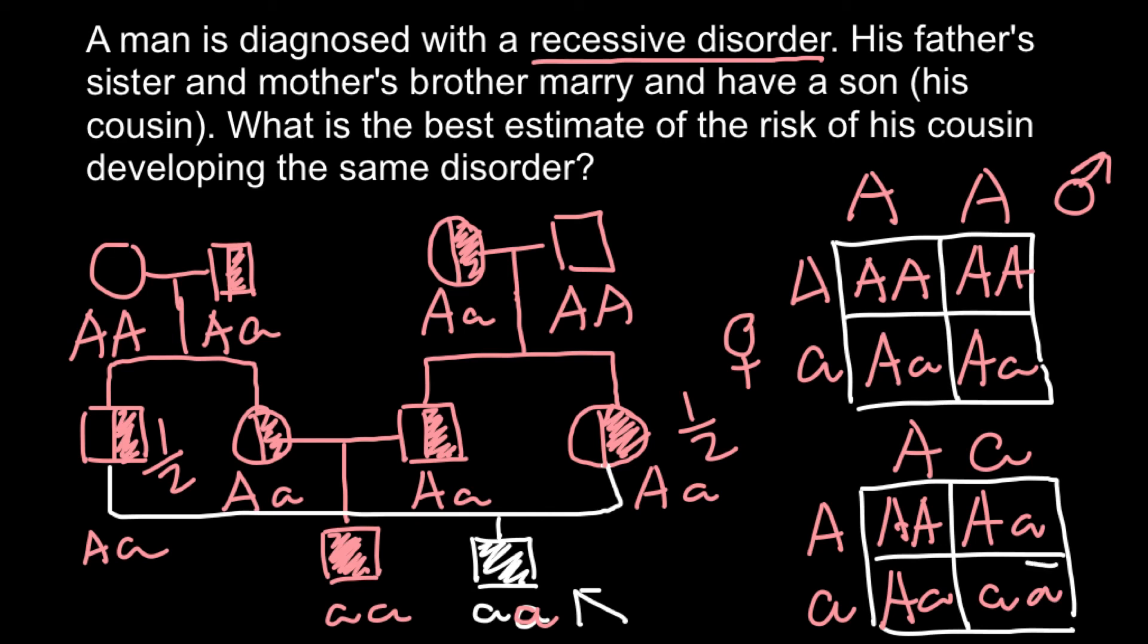Probability would be one quarter to be affected. So probability of the mother to be a carrier one half, probability of the father to be a carrier also one half, and probability for them to have an affected child would be one quarter.